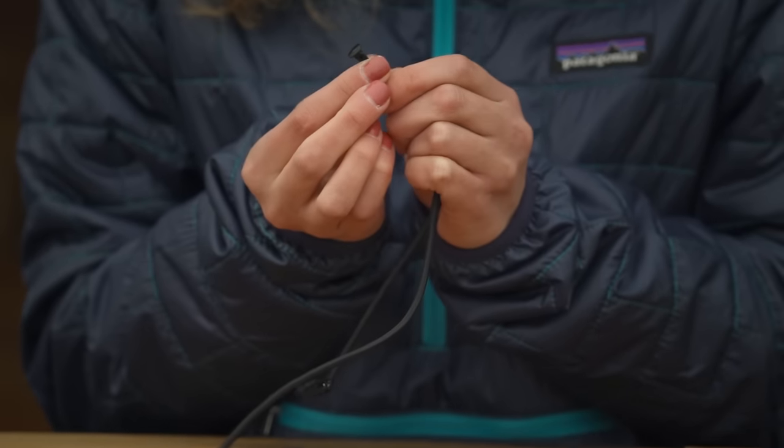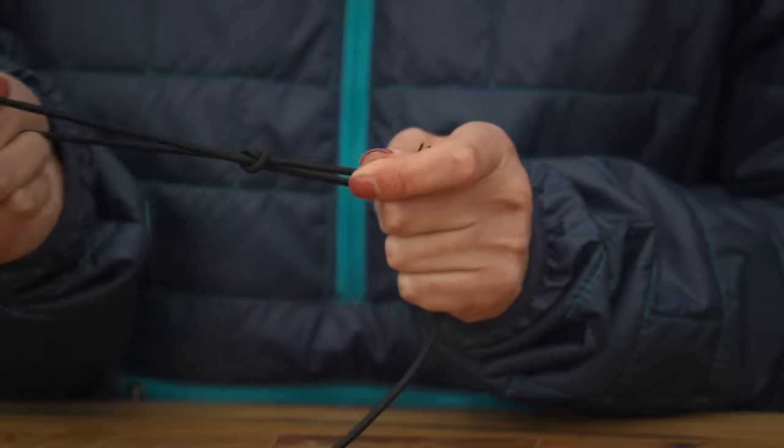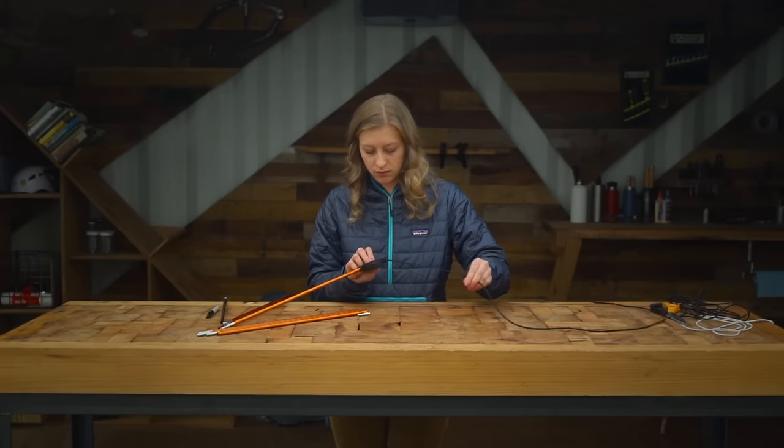Next, choose an end and attach the cord to its tab. Now you can start threading the shock cord through the poles. You'll be grateful you took the time to number them earlier.